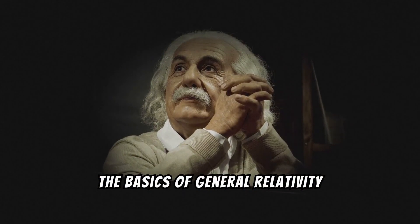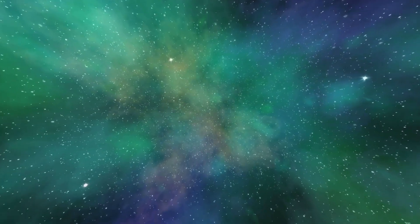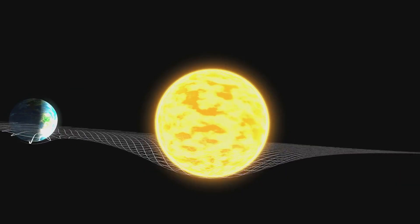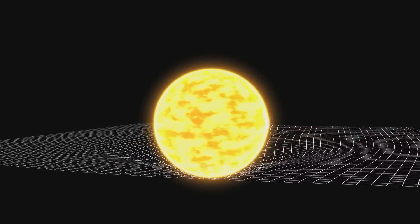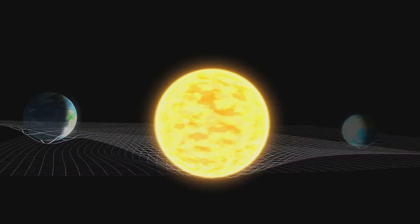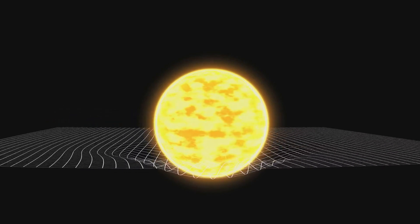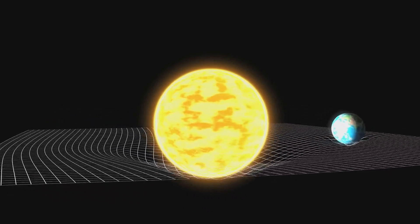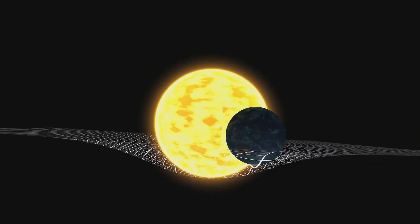Let's explore general relativity, which extends these ideas to include acceleration and gravity. Einstein proposed that gravity isn't just a force between masses, but a curvature of space-time itself. Massive objects like planets and stars bend the fabric of space-time, creating what we perceive as gravity. To illustrate, think of space-time as a stretched trampoline. Place a heavy ball in the center, and it creates a depression. Smaller balls placed nearby will roll towards the heavy ball, mimicking how gravity pulls objects together.